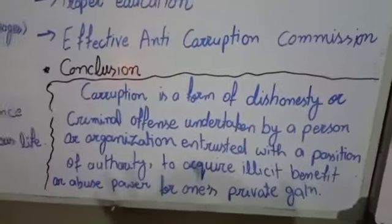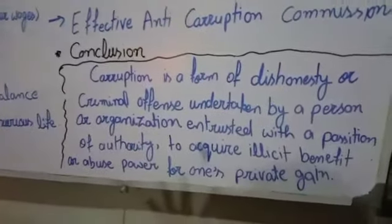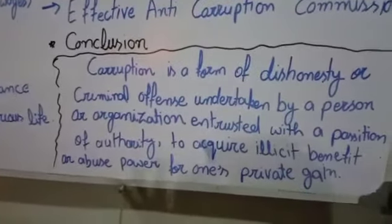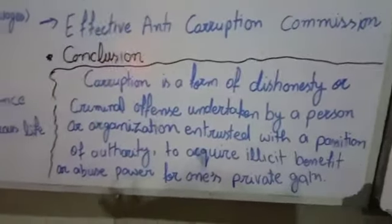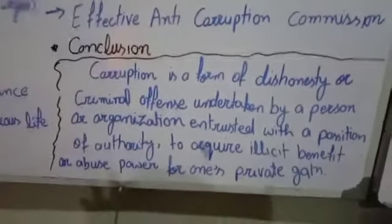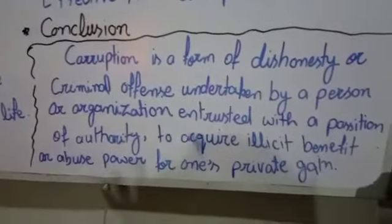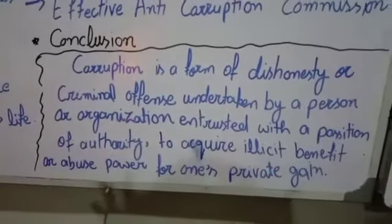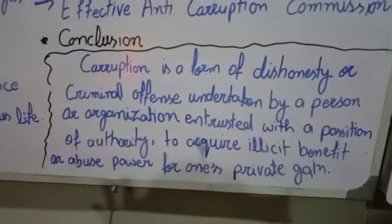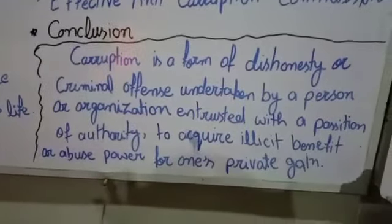Conclusion میں آپ نے ایک last paragraph لکھ کر ان تمام باتوں کو one by one again repeat کرتے ہوئے conclude کرنا ہے۔ سب سے پہلے corruption کی definition بتائیں کہ وہ کیا ہے۔